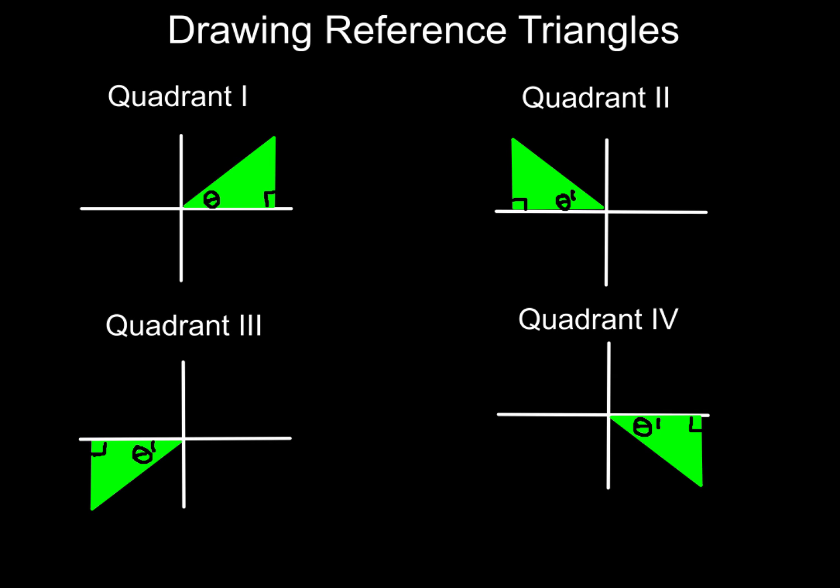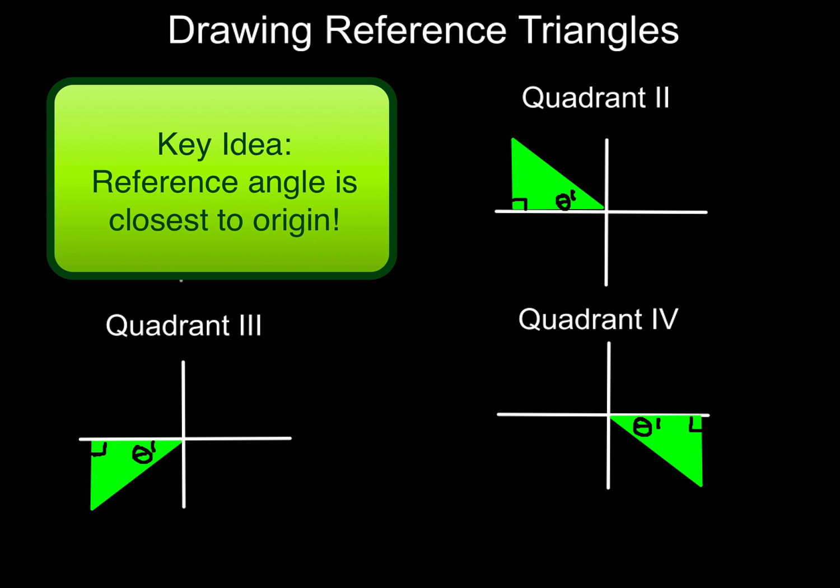Now, for drawing reference triangles, we're going to end up with a triangle that could be in quadrant number 2, we could have a reference triangle in quadrant number 3, or we could have one that's in quadrant number 4, and all of these, of course, would be a right triangle, and our reference angle θ' is always going to be closest to the origin.